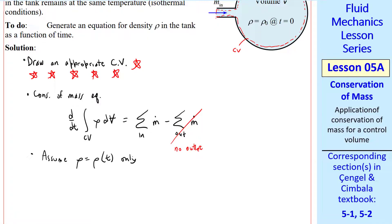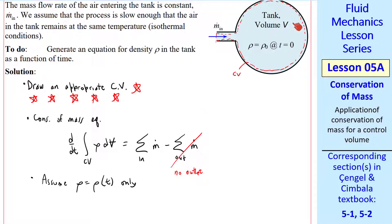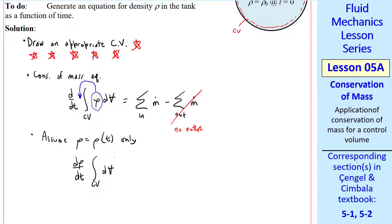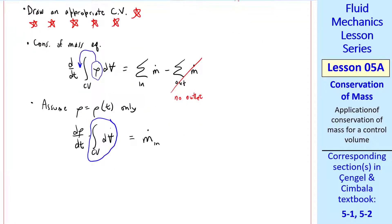Let's assume rho is rho of t only. In other words, density changes with time, but density is the same anywhere inside this tank. It's not a function of space. That allows us to take this density outside of the integral since density is not a function of spatial variables. So the left hand side becomes d rho dt times the integral over the control volume dv. But since this is just a volume integral of dv, this integral is just v itself. And this volume is constant since the tank is rigid.